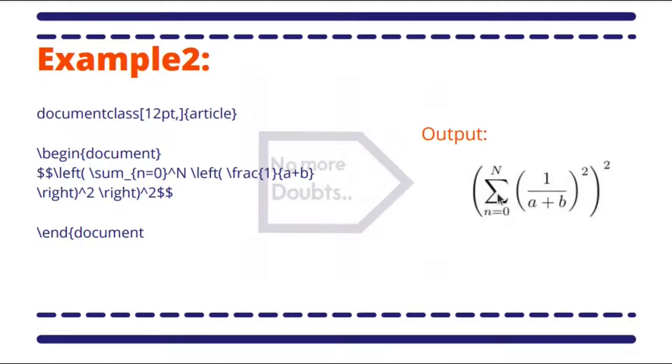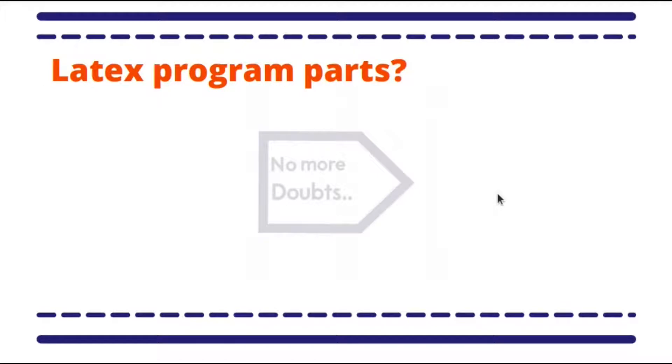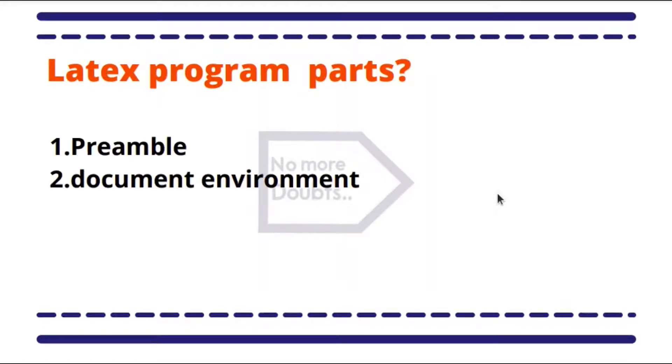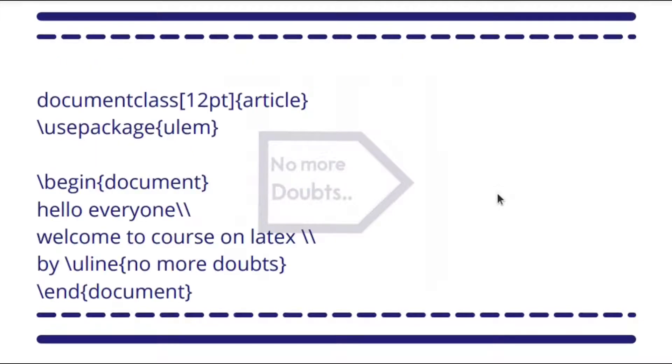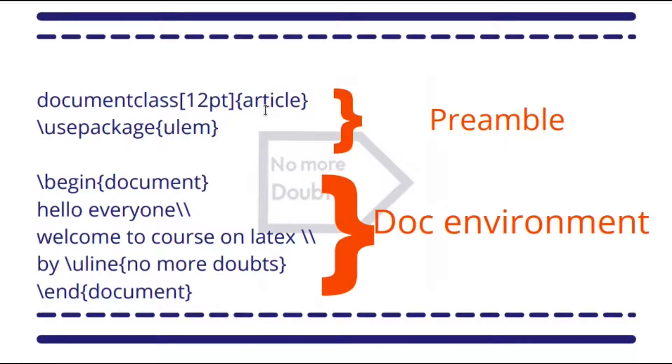Next we will see the parts of the LaTeX program. A LaTeX program is mainly of two parts: one is the preamble and the document environment. If we consider the first example we have seen, in this program the preamble is the documentclass which says the type of the document and the packages we included, and the second part is the document environment.